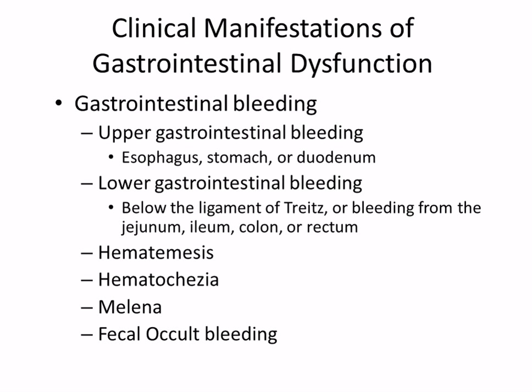Melena is technically the coffee-ground appearance of blood in vomit. Hematemesis is the vomiting of blood described as melena. Fecal occult bleeding is when you test the stool and find hemoglobin even though the stool doesn't look red — it means there's hidden bleeding somewhere that's not yet obvious.